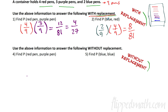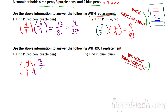Now without replacement — we'll do the same red-and-purple problem. Pull out a red pen: probability is 4 out of 9. But this time we keep the pen out. Now there are only 8 pens left in the box, and there are still 3 purple ones. So the second probability is 3 out of 8. Multiply: 4/9 times 3/8 equals 12 out of 72, which reduces to 1 out of 6.